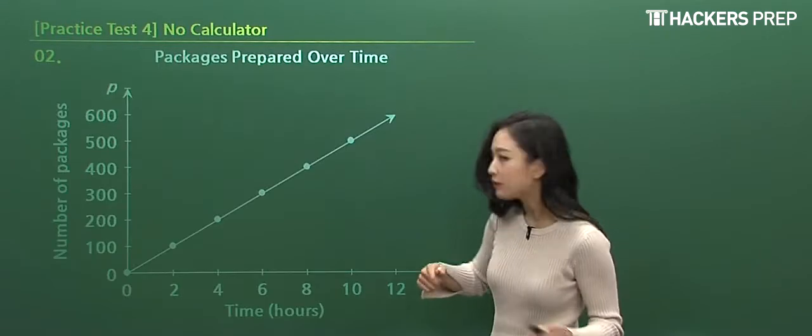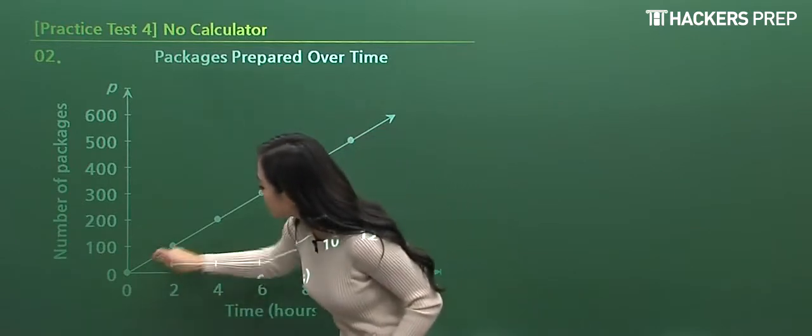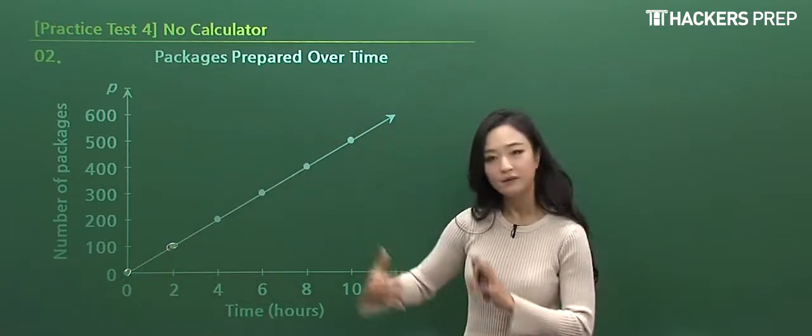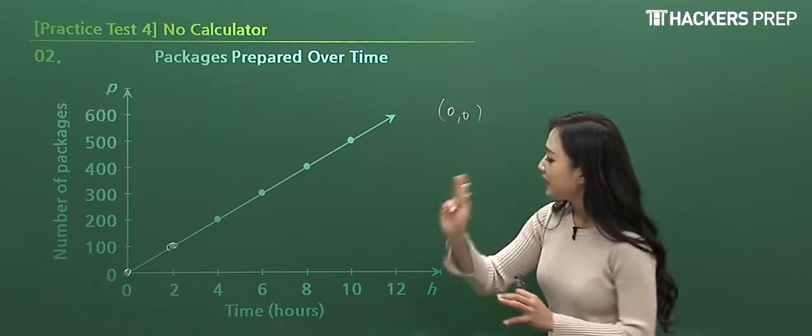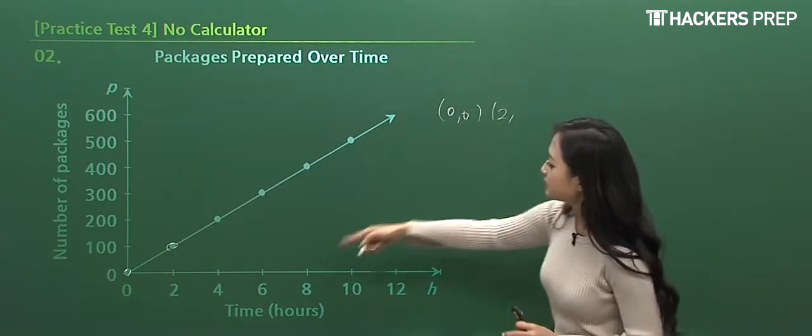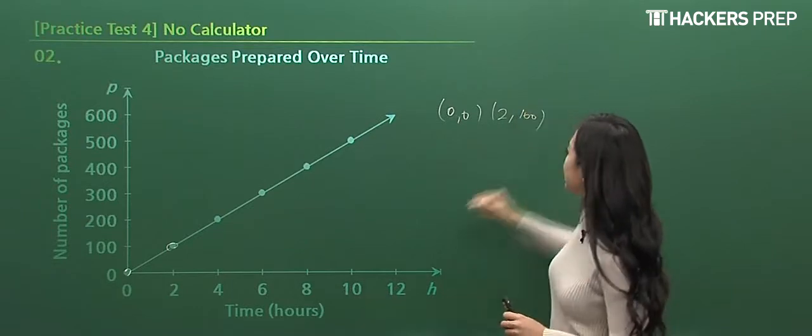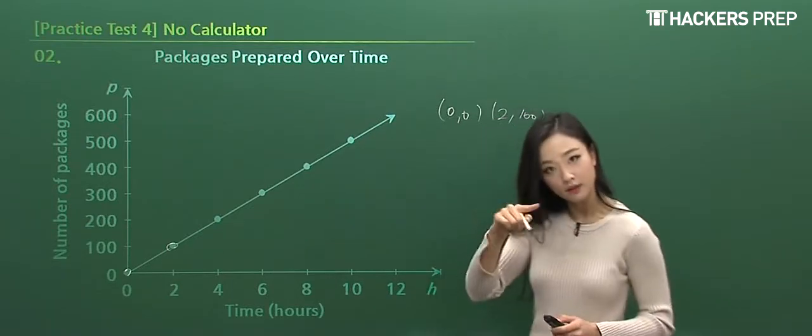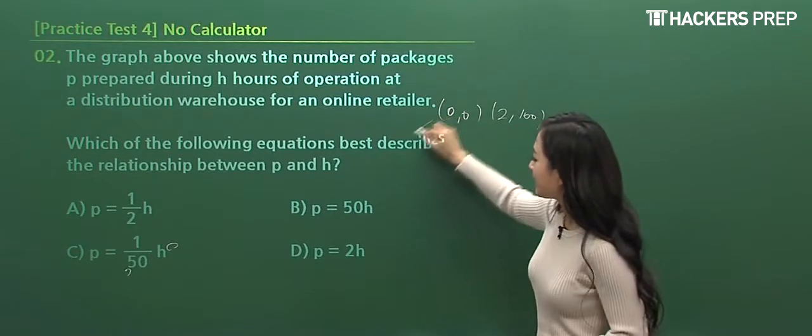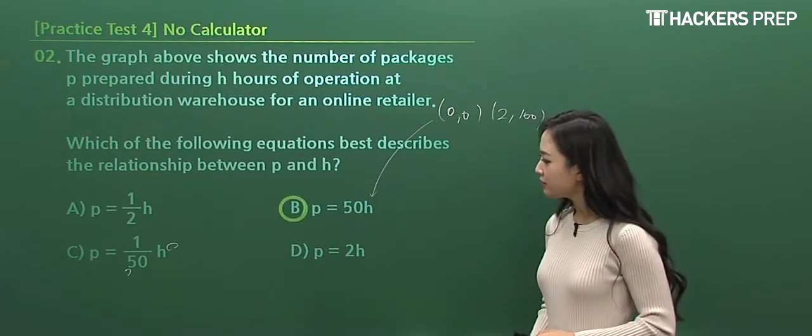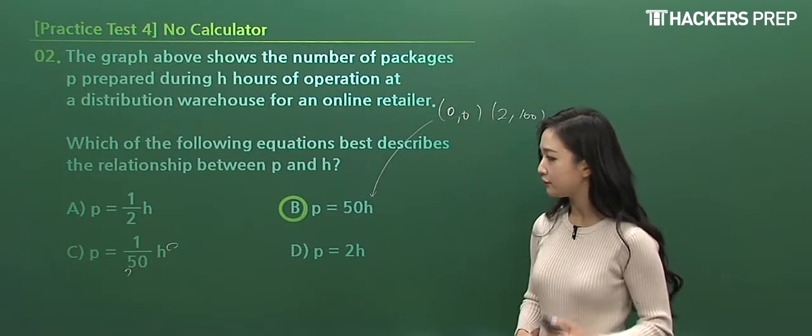This is the background information, and the question begins at the final sentence. Which one of the following best describes the relationship between p and h, so we just simply need to model the trend into an algebraic expression. So let's go back. We can see that, for instance, should we take these two points as a reference? We have the origin, 0,0, let's write it here. And the second point refers to a point of 2,100, and can you tell me what the slope is? Change of y over change of x, therefore 50, and it does begin at the origin, therefore,